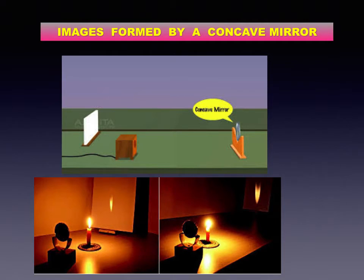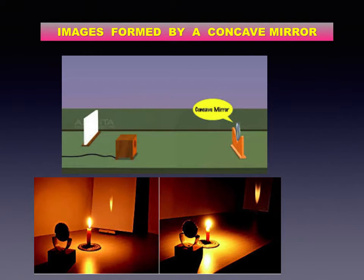Now we can study images produced by spherical mirrors by drawing ray diagrams. A ray diagram depicts the path taken by light rays. We use the following rules based on the laws of reflection: Rule 1 — if an incident ray is parallel to the principal axis, the reflected ray passes through the principal focus. Rule 2 — if an incident ray passes through the principal focus, the reflected ray is parallel to the principal axis. Rule 3 — if an incident ray passes through the center of curvature of the mirror, the reflected ray traces the same path back.